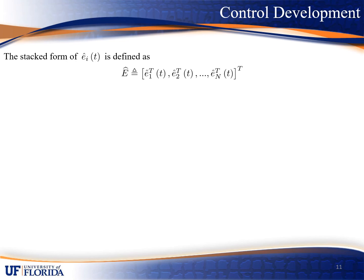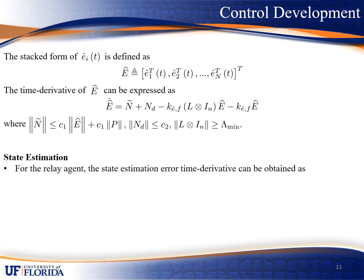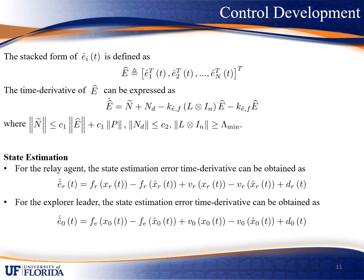We define capital E hat as the stack form of the estimate error of agent I. Taking the time derivative of capital E hat, we obtain E hat dot, and all these signals can be upper bounded — the details can be found in the paper. For the state estimation errors, we use E_{R,total} dot and E_{0,total} dot to represent the time derivatives of the state estimation errors for the relay agent and explorer leader respectively, and these will be used in the subsequent stability analysis to find the corresponding dwell time conditions.